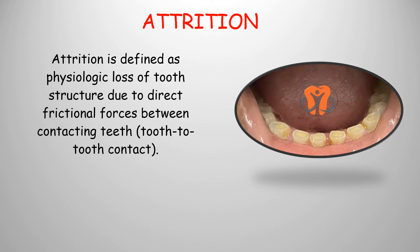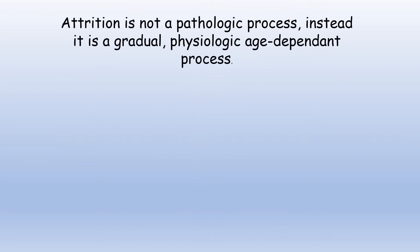Attrition is defined as a physiological loss of tooth structure due to direct frictional forces between the contacting teeth — that means tooth-to-tooth contact. The teeth contact each other, rub against each other, and they cause attrition. Attrition is not a pathological process; instead, it's a gradual physiological age-dependent process.